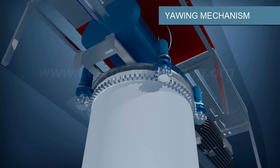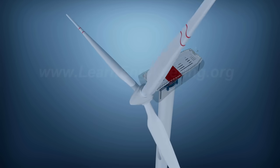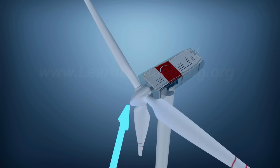You can see how the yaw motors turn the nacelle. Thus, the wind turbine will always be aligned with the wind direction.